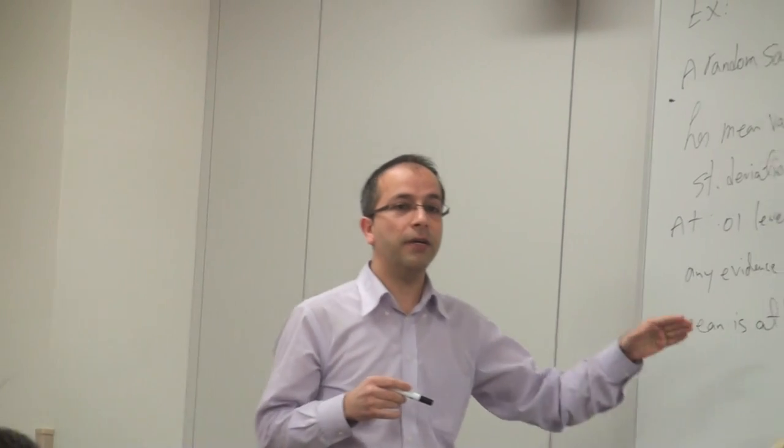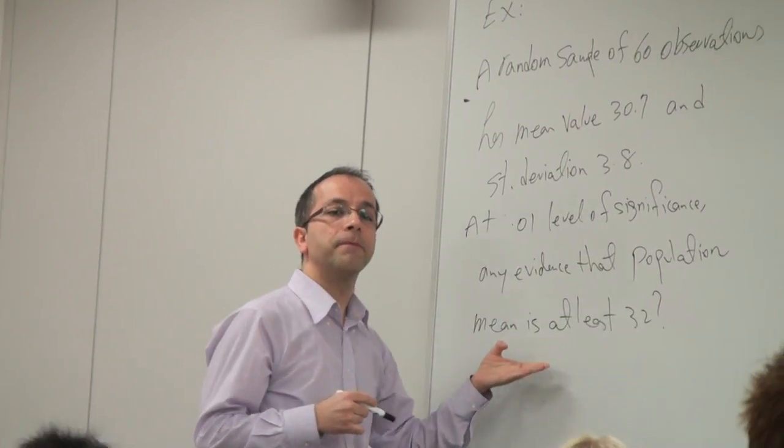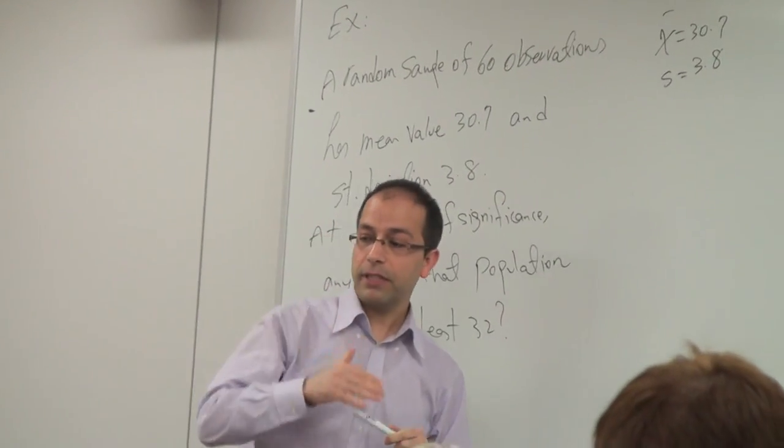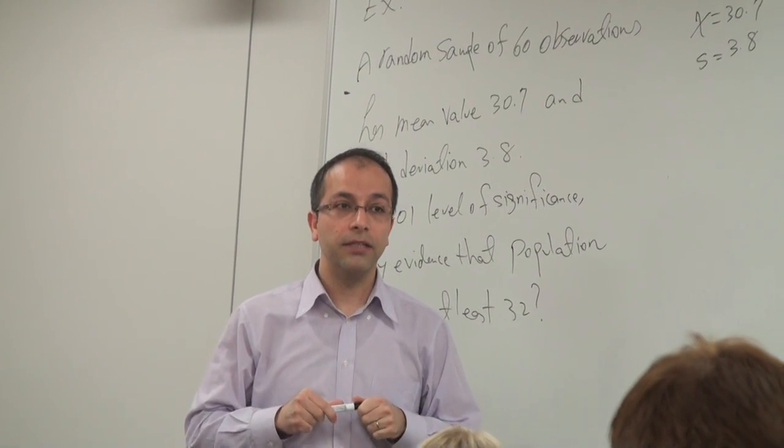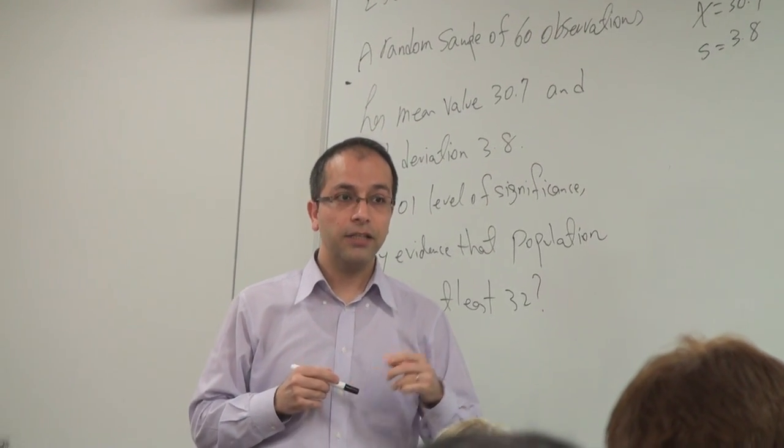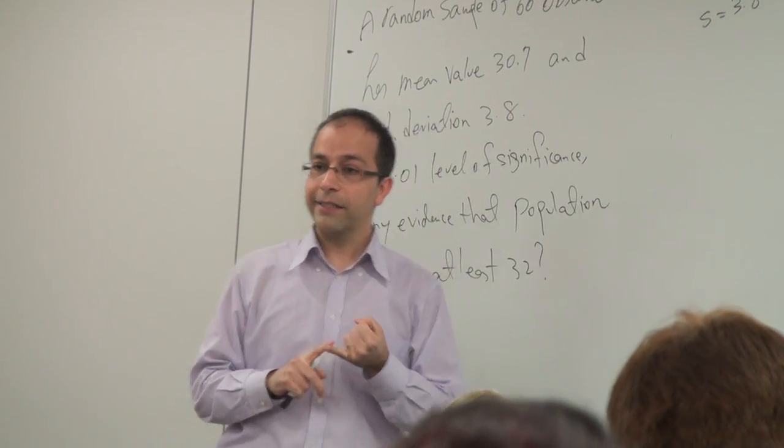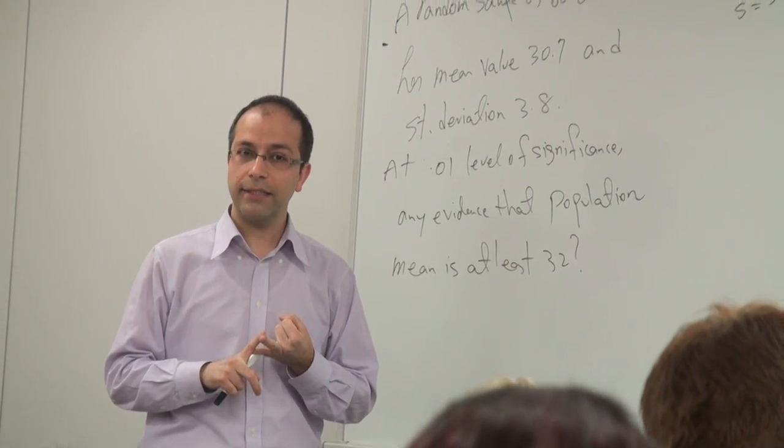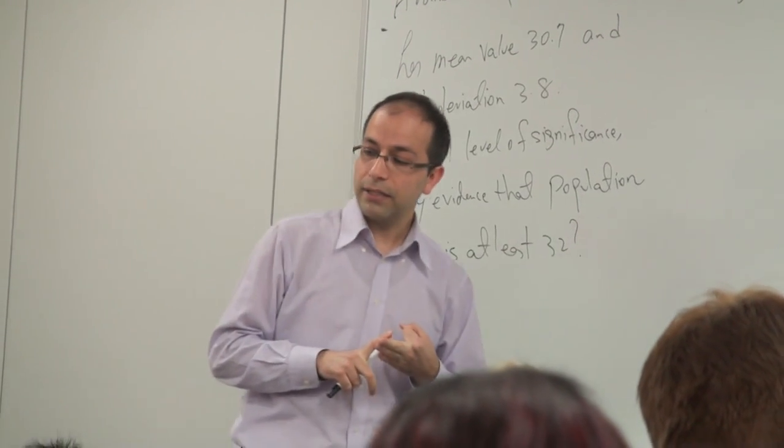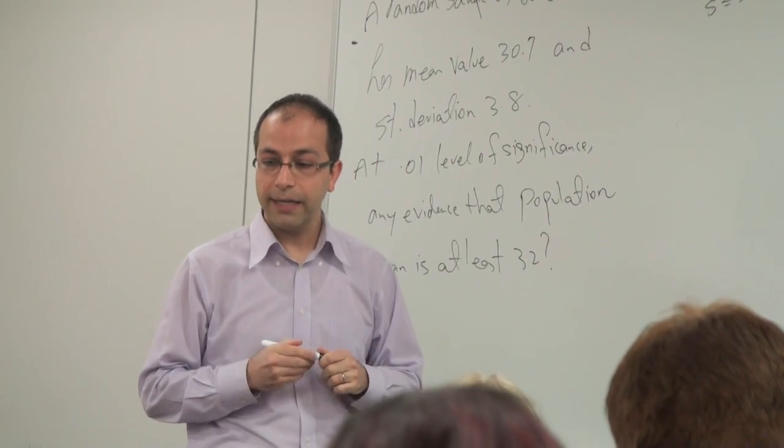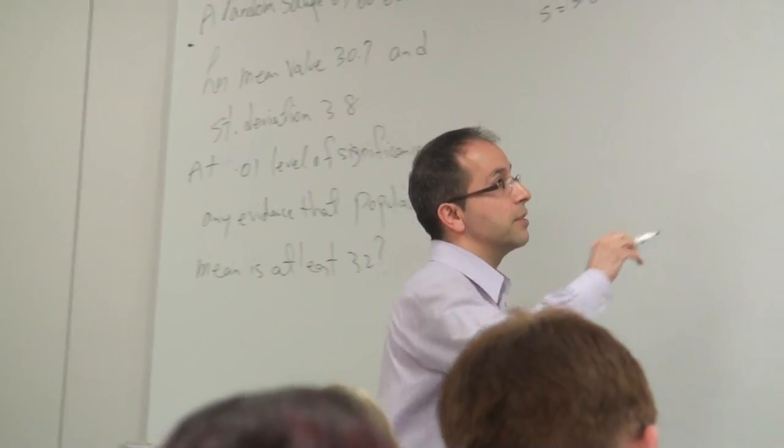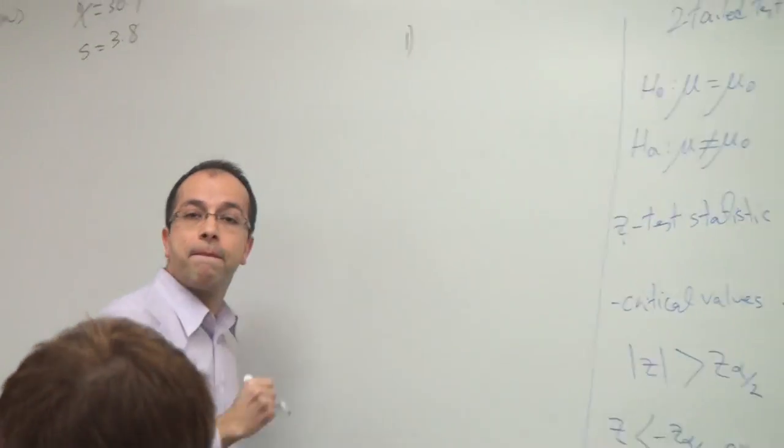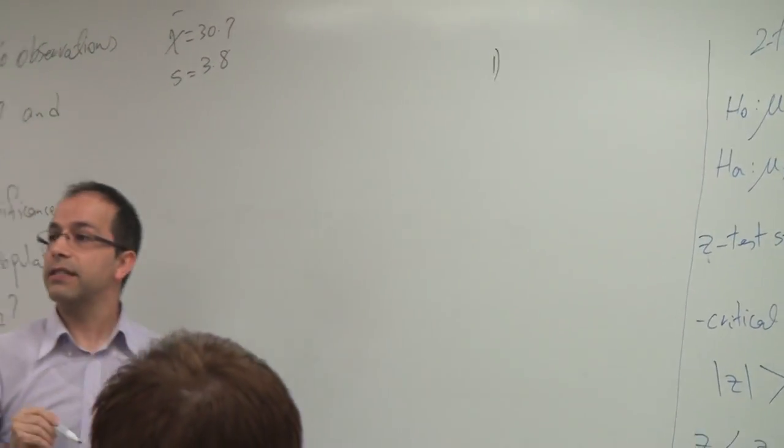How to write H₀ and Hₐ for this question? We learned four steps. First, state the question statistically, then state the opposite statistically. Then choose the alternative hypothesis first, followed by the null hypothesis.